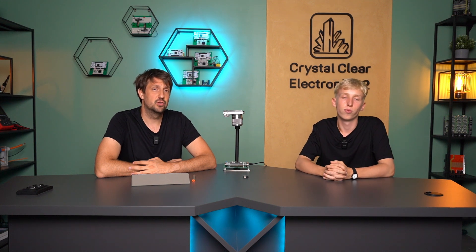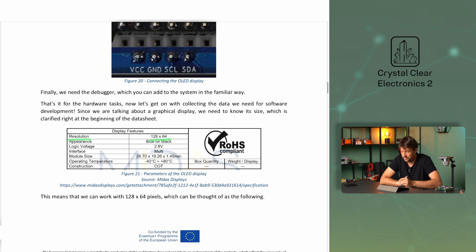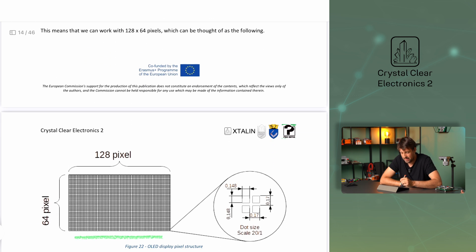That's it for the hardware tasks, now let's get on with collecting the data we need for software development. Since we are talking about a graphical display, we need to know its size. The resolution line data means that we can work with 128 times 64 pixels. This is our canvas — it can be painted on. In our case, it is by default a black background on which we can draw light dots. Here the light dots are blue. If we do this painting cleverly enough, we can turn the dots into letters, numbers, shapes, and pictures.